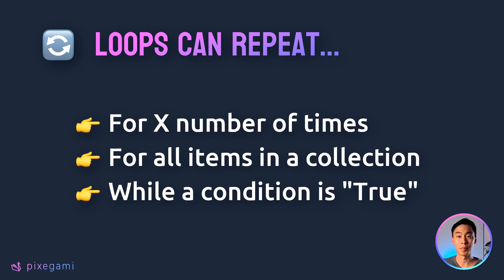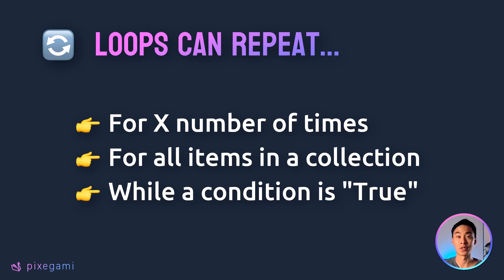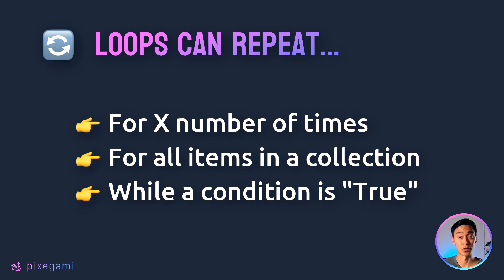For example, we can repeat for a fixed number of times, like counting to 100. Or if we have a list of items, we can go through each item and do something with it, like calculating the total checkout price of a shopping cart. Or we could keep repeating a loop forever as long as a certain condition is true — like if we're making a game, we can run the code in a loop until the player decides to quit.